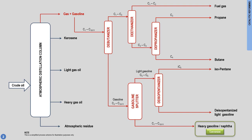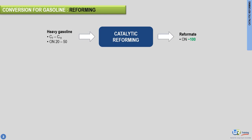Refiners use catalytic reformers to address both quality and quantity concerns. As seen here, the octane number of the feed is between 20 and 50. The product of the catalytic reformer, also called reformate, has an octane number of 100. This conversion process significantly upgrades the octane number and yields an excellent quality blending component for gasoline.